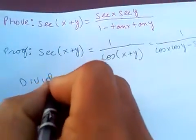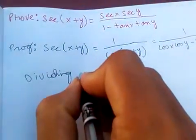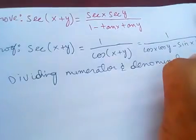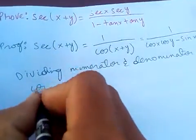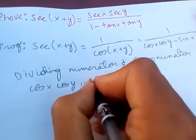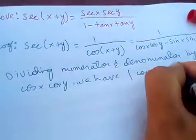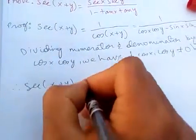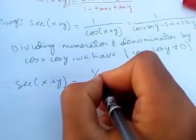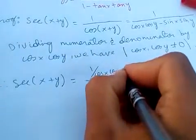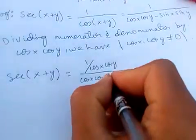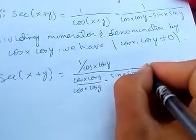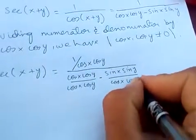Dividing numerator and denominator by cos(x)cos(y), such that cos(x) and cos(y) are not equal to 0. Therefore, sec(x + y) equals — dividing both numerator and denominator — 1 over cos(x)cos(y) in the denominator, which gives cos(x)cos(y) over cos(x)cos(y) minus sin(x)sin(y) divided by cos(x)cos(y).